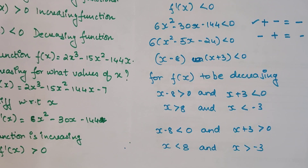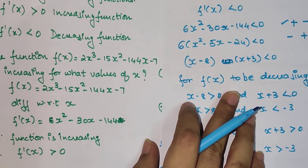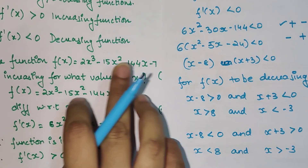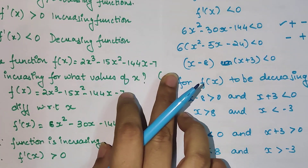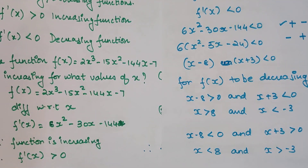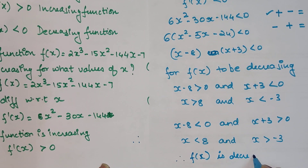In the decreasing case, the second scenario gives us a proper range. x < 8 and x > -3 means we have a range where the function is decreasing. To verify, we can take any value in between — say x = 1. Putting x = 1 gives 2 - 15 - 144 - 7, and since all numbers greater than 2 are negative, the entire value will be negative, confirming f(x) is decreasing in that range. Therefore, f(x) is decreasing for -3 < x < 8.